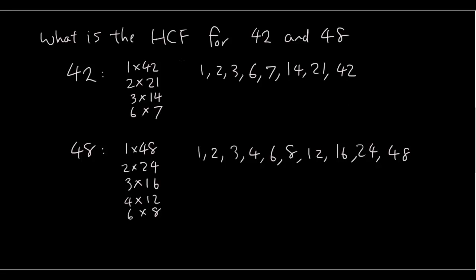OK, so out of the two lists, we can see that we got 1, 2, 3, 6. These are the common factors. We can't see anything bigger than 6, so therefore 6 is the highest common factor.